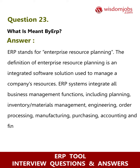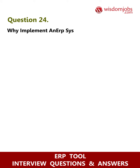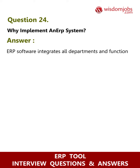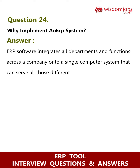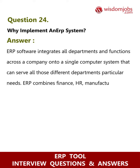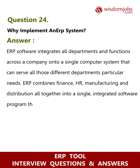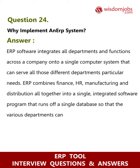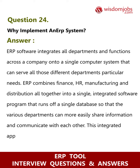Question 24: Why implement an ERP system? Answer: ERP software integrates all departments and functions across a company onto a single computer system that can serve all those different departments' particular needs. ERP combines finance, HR, manufacturing, and distribution all together into a single integrated software program that runs off a single database, so that the various departments can more easily share information and communicate with each other.